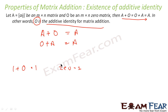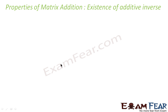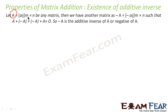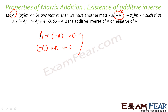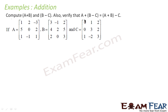The existence of additive inverse says that for every matrix A of order m by n with elements aij, there exists another matrix minus A with elements minus aij of the same order, such that A plus minus A equals the zero matrix, and minus A plus A also equals the zero matrix. Just like in normal arithmetic, where the additive inverse of 2 is minus 2 since 2 plus minus 2 equals zero, minus A is the additive inverse of A.